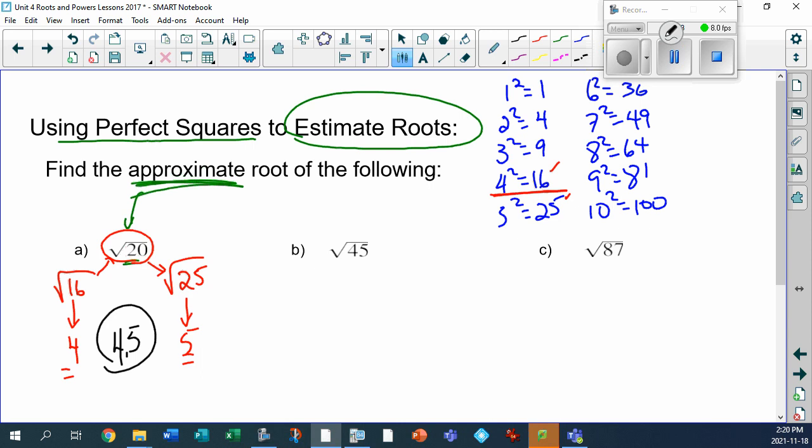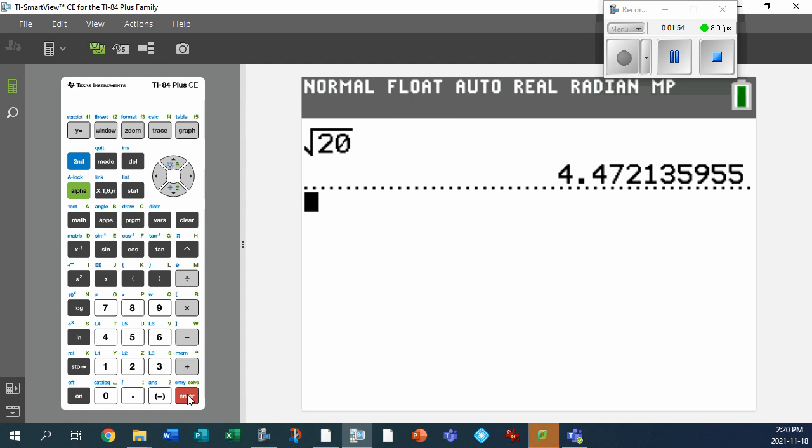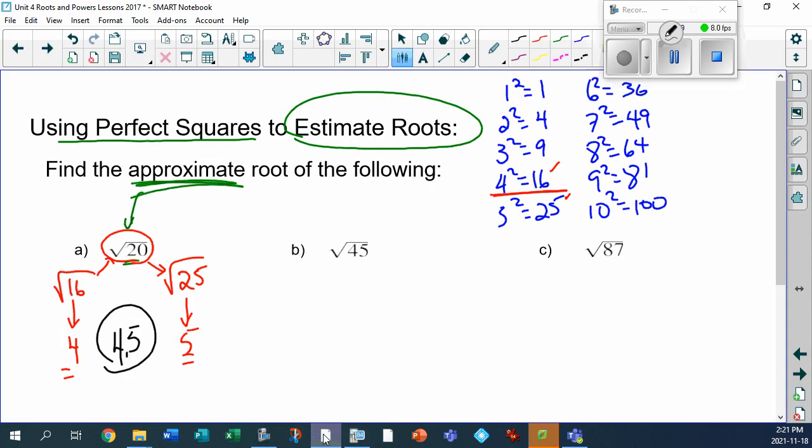And I know what you're saying. Oh, yeah? Prove it. Well, let's pull up the calculator. Here's my calculator. Let's go. Second square root, 20. Bang. 4.47. Oh, my goodness. I was right on. 4.47 is, in fact, very close to 4.5. Ta-da!